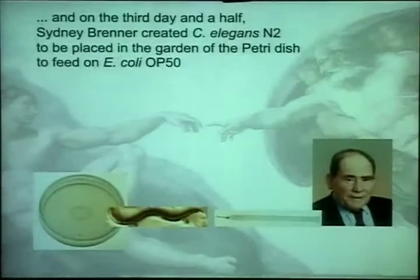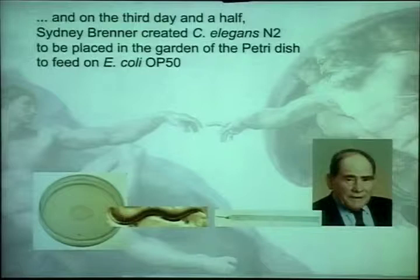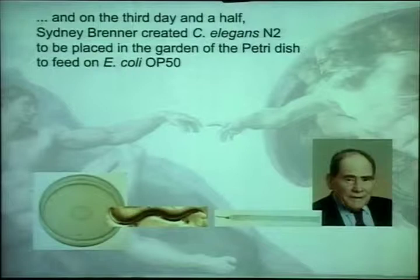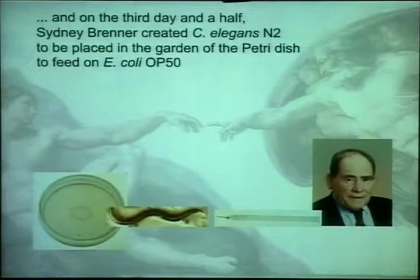Thank you very much for the invitation. I'm not going to cover everything tonight. I think especially in the C. elegans community, many are ready to believe that C. elegans N2 was created on the third day and a half by Sidney Brenner, and that it was placed by him in the garden of the Petri dish to feed on OP50 forever and live happily. Part of what we as a community are trying to do is show that there is some variation around C. elegans N2, and that the Petri dish is not the natural environment.